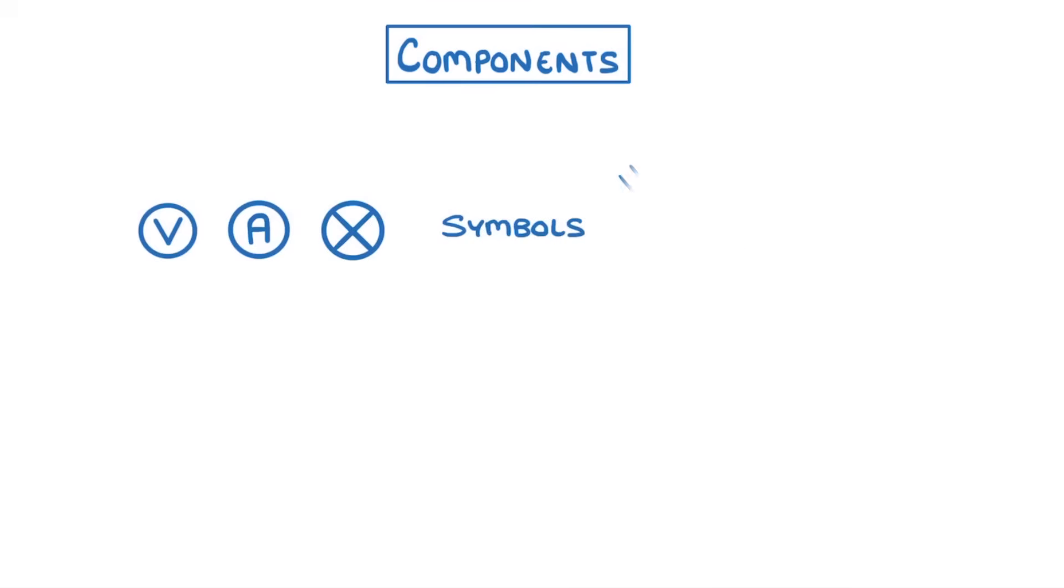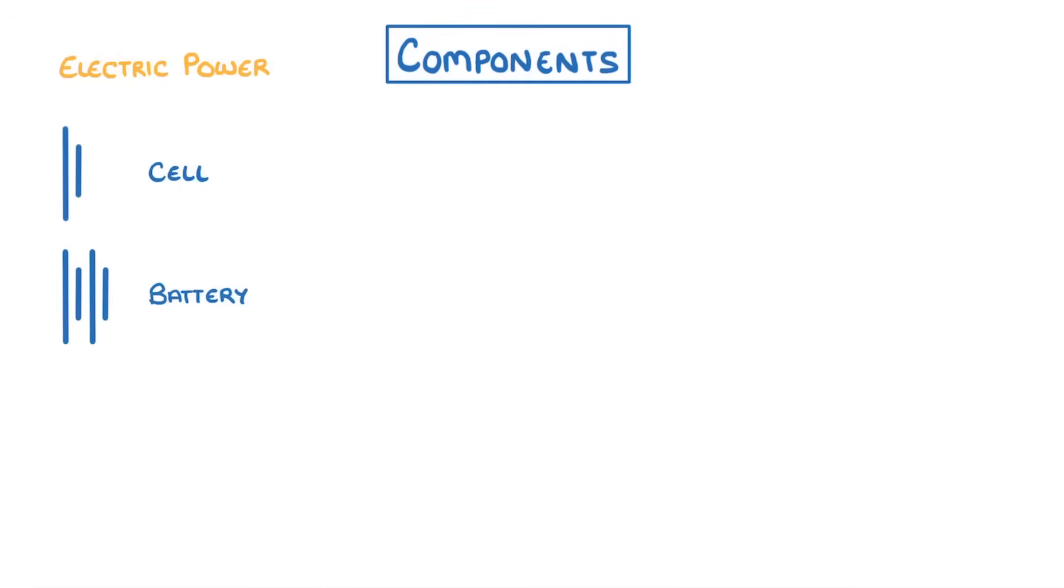To provide electric power to a circuit we need either a cell or a battery. And to control the flow of the electricity we could also add a switch which can be closed allowing electricity to flow or open which effectively turns off the circuit because it's no longer complete.